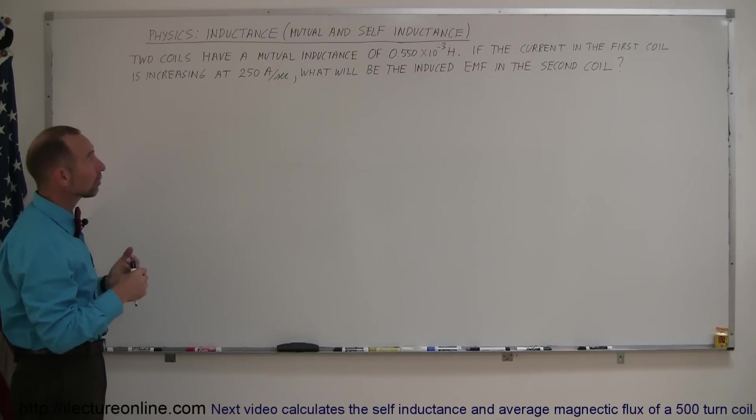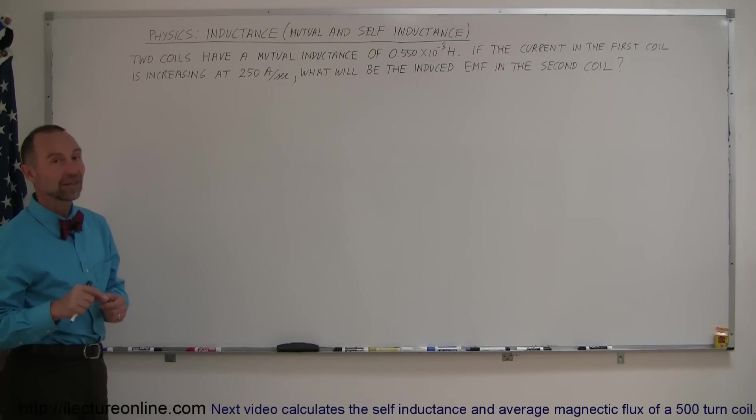And the two coils have a mutual inductance of 0.55 times 10 to the minus 3 Henrys. If the current in the first coil is increasing at 250 amps per second, what will be the induced EMF in the second coil?